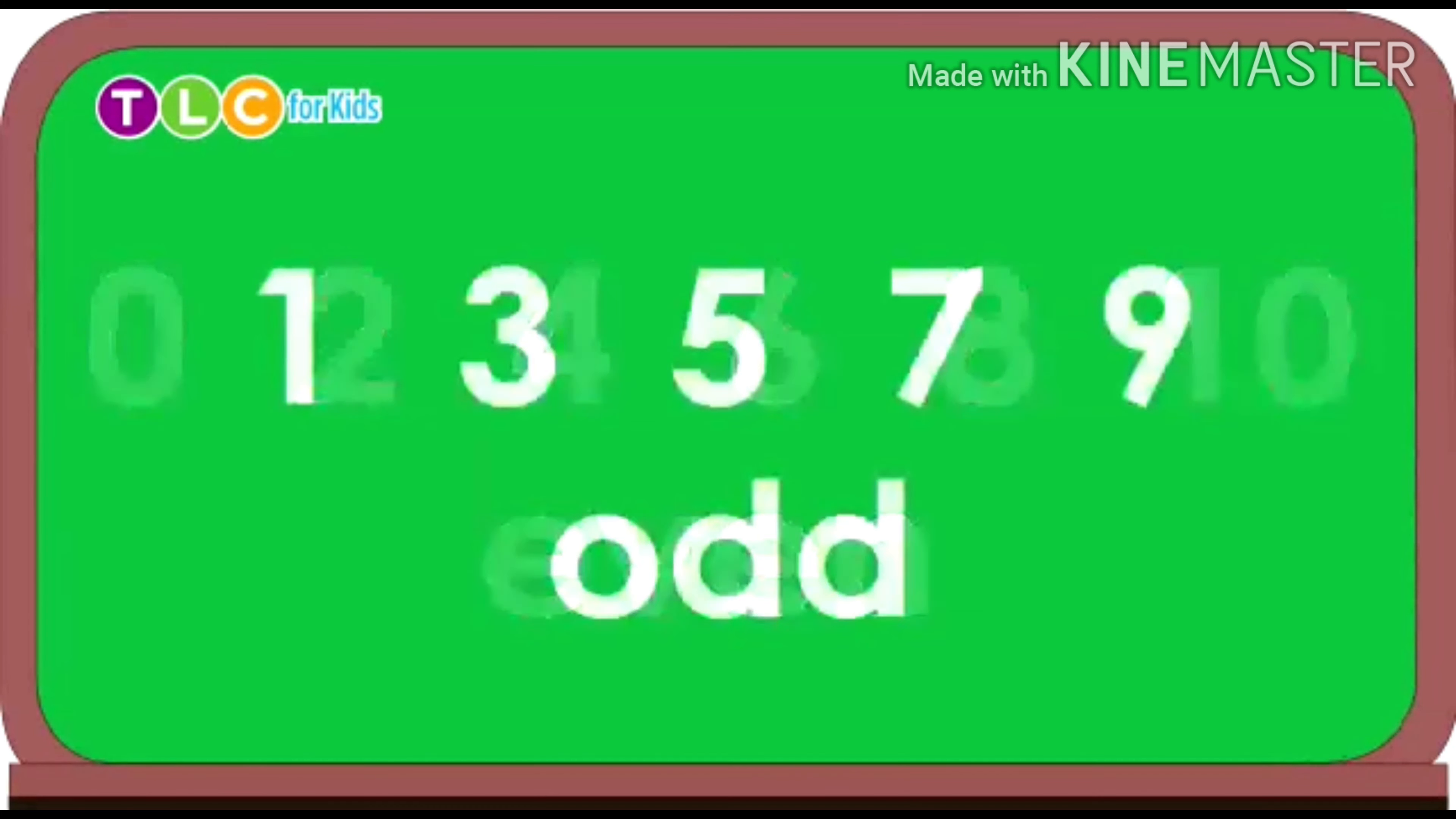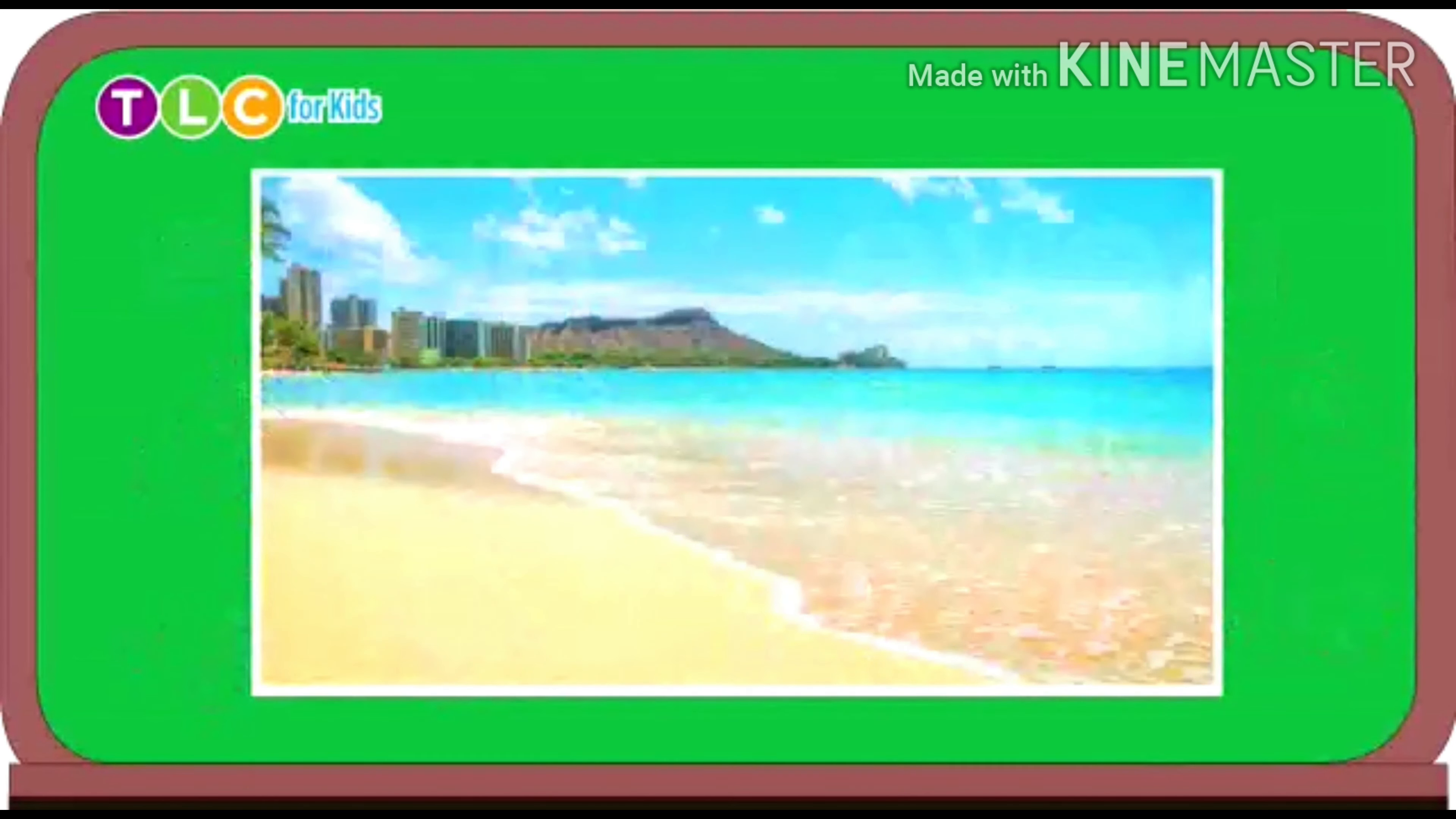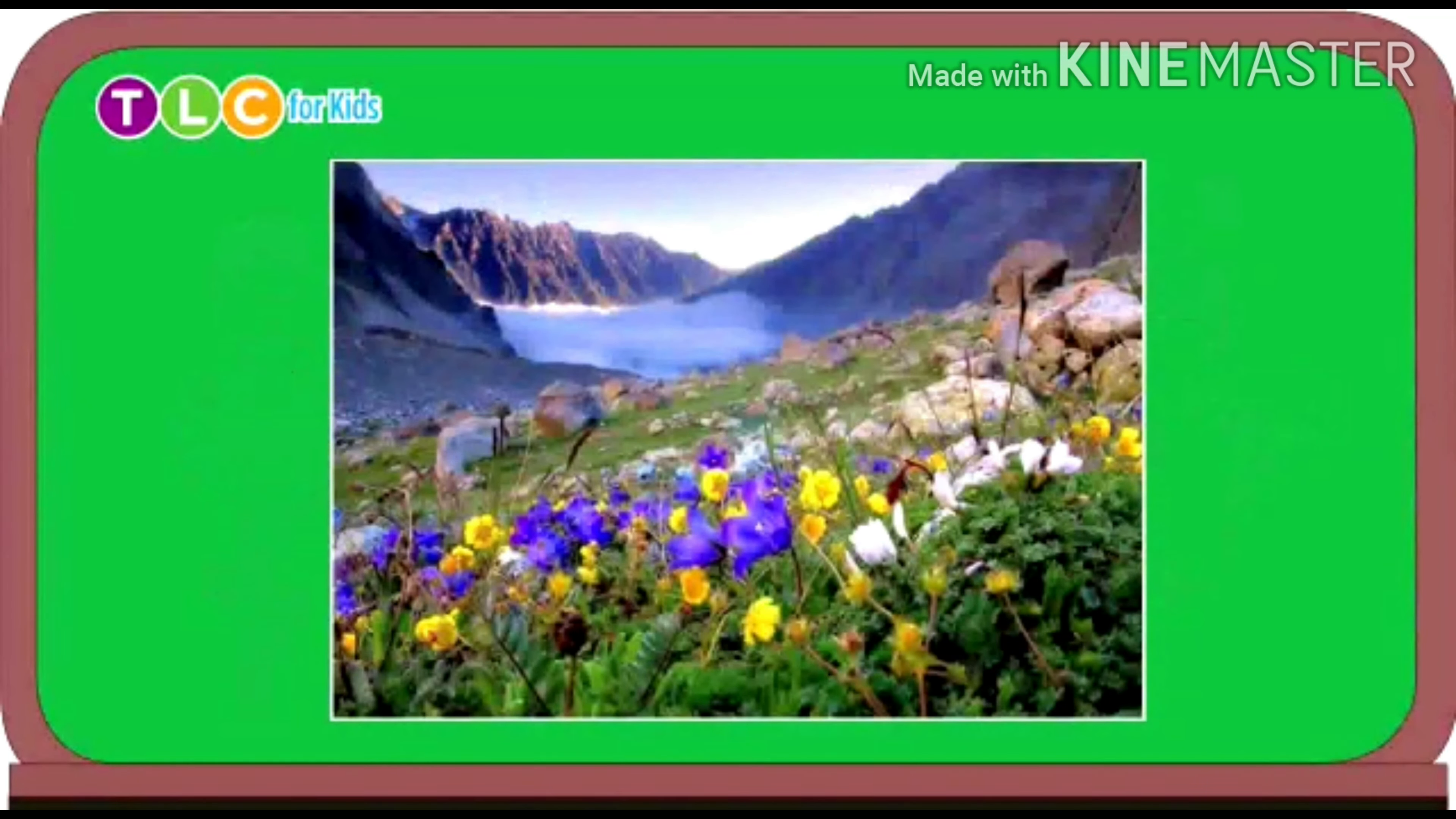I saw four hermit crabs and six tropical fish. Even numbers of crabs and fish I saw at the beach. You saw three beautiful flowers and five colorful birds. Odd numbers of flowers and birds you saw in the mountains.